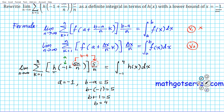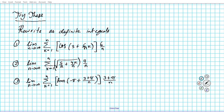Now let's try out some examples. We're going to give you three examples to try at this time. The instructions are for you to rewrite these three limits of Riemann sums as definite integrals. Go ahead and pause this video presentation, rewrite them as definite integrals, then click the playback button and we'll show you the correct answers.